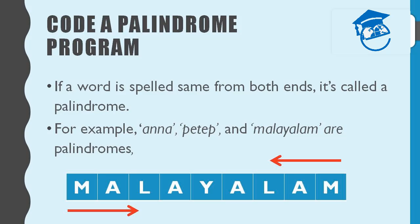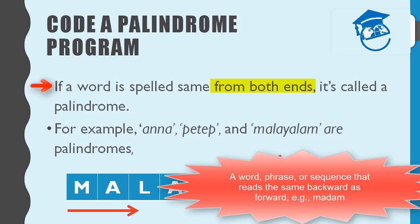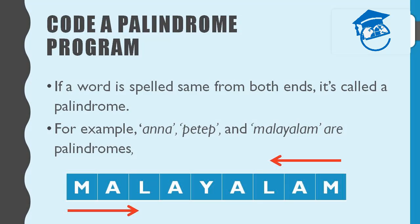Let's try a little puzzle called palindrome. A palindrome is a word that is spelled the same from both ends. For example, the word 'anna' from the forward and from the backward has the same letters: A, N, N, A. Likewise, if we take the word 'Malayalam', from the forward we have M, A, L, A, Y, A, L, A, M and from the backward we get the same letter format.